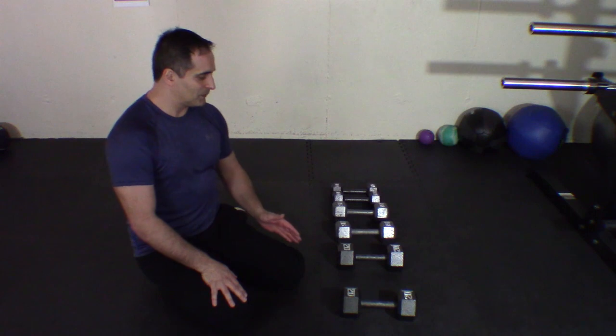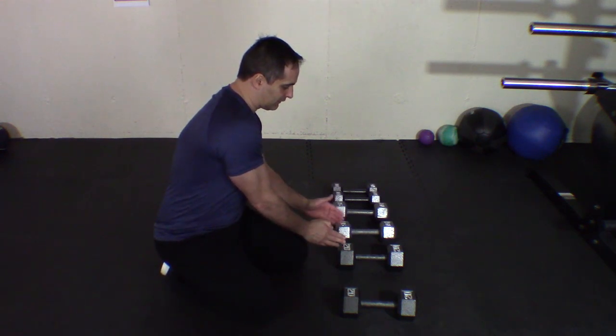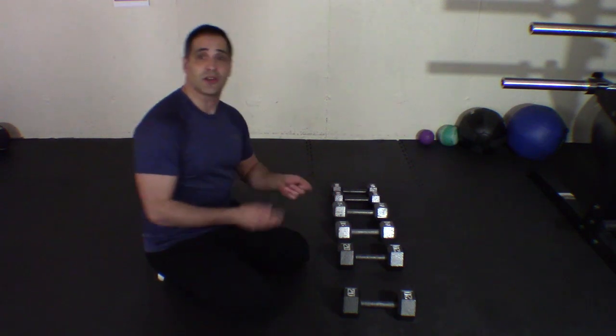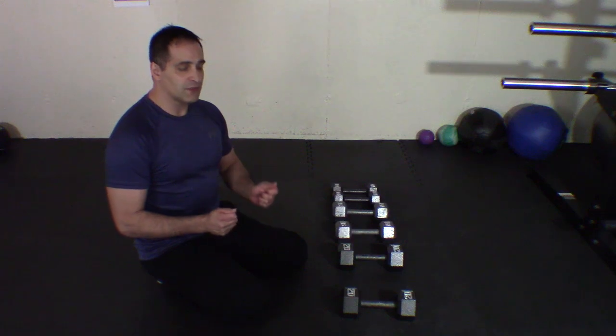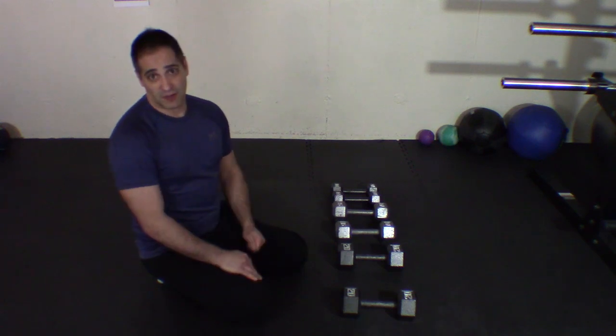And then when you're running down the routine, you're going to have at one point a 15 and a 20 or whatever two weights you use, and they're offset. It's called offset weight. And that's really difficult for the body because the body thinks it's going to be two of the same weight when you do the renegade, and when you mix it up, it's very difficult.